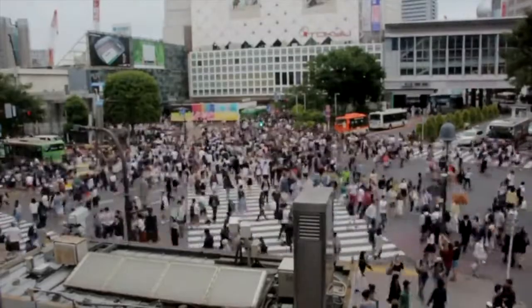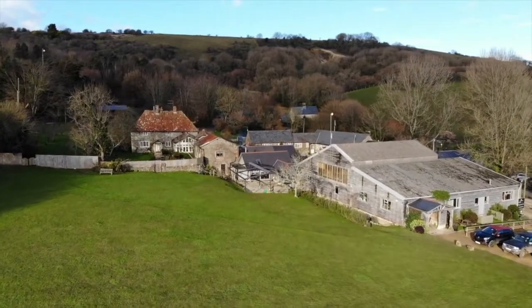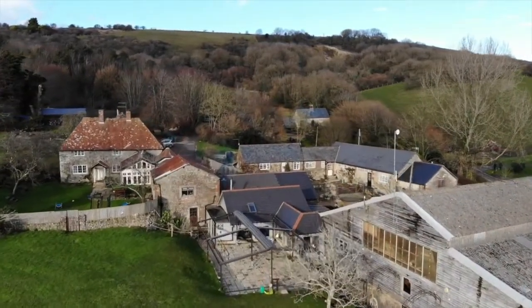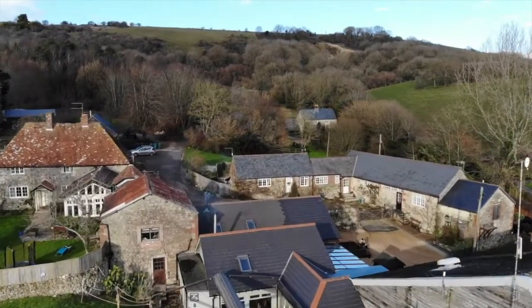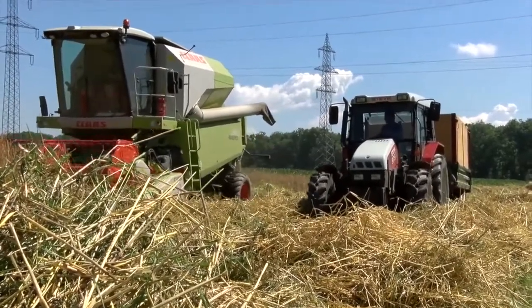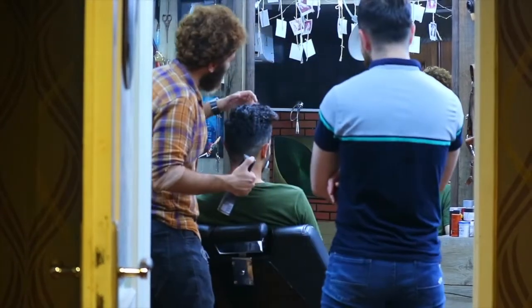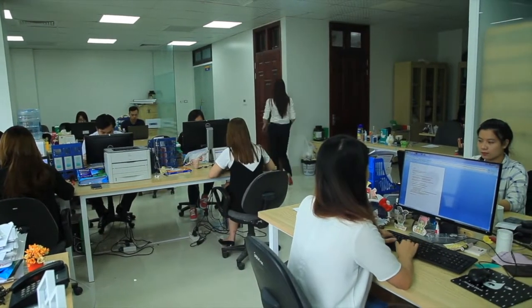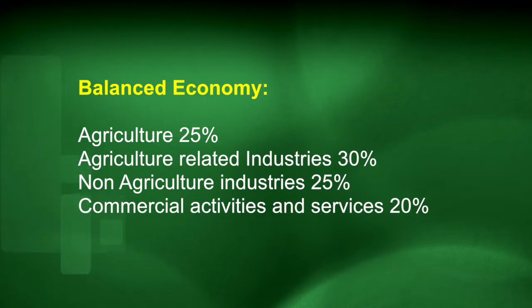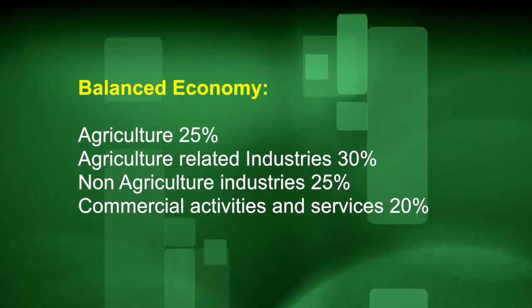Inherent in decentralised planning is the concept of a balanced economy. Ideally, approximately 25% of the workforce would be engaged in agriculture, with 30% in agriculture-related industries. A further 25% would be in non-agricultural industries, with 20% in commercial activity and services. Prout believes the economy should be balanced, as if one sector is too predominant, this is unhealthy. For example, some first world countries exploit other third world countries to meet their lack of agricultural or industrial goods.